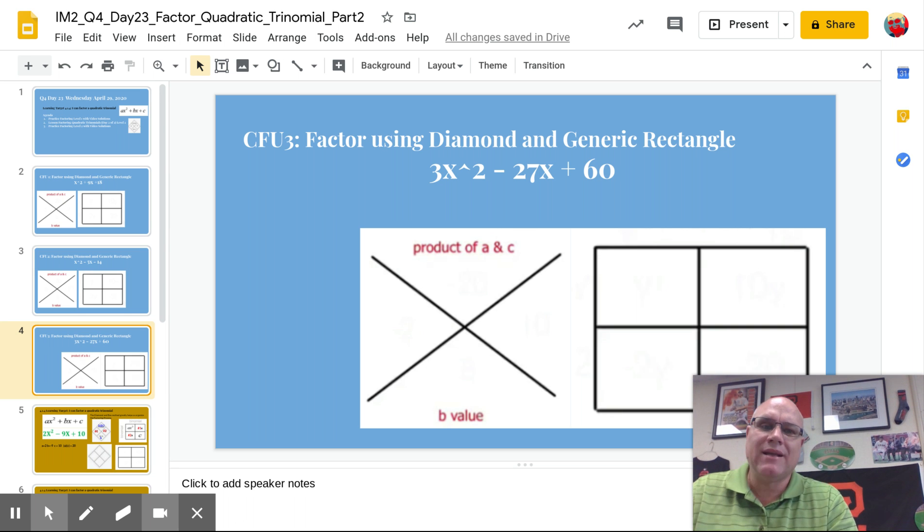Factor 3x squared minus 27x plus 60. So the first thing you should probably notice on this one is, whoa, our a value is not 1 this time. It's 3.